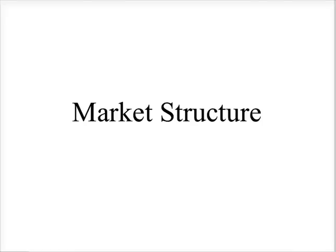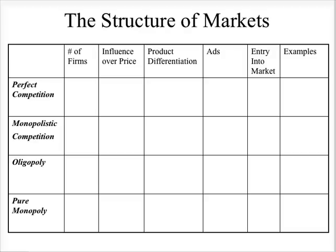Today's lecture is going to be on market structure. There are four different market structures that we're going to study: perfect competition, monopolistic competition, oligopoly, and pure monopoly. These different market structures are determined by various categories, such as the number of firms in the market, firms' influence over price, product differentiation, if there's advertising used, ease of entry into the market for other firms, and some examples.